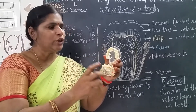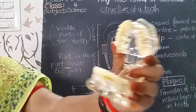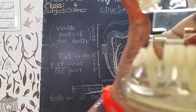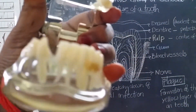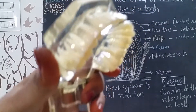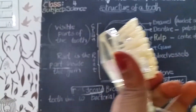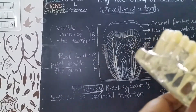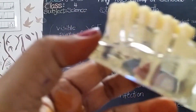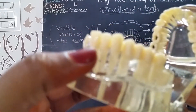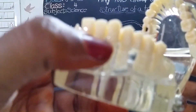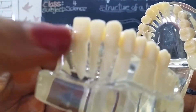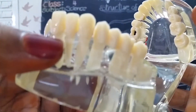Each tooth has a root. Some teeth have one root and some have one or two roots. These are all the roots — this is the tooth and this is the root. We cannot see the root because it grows inside the gum.